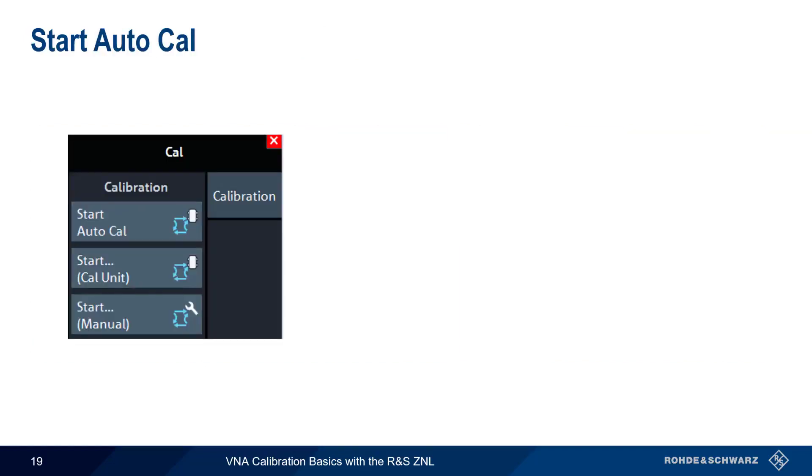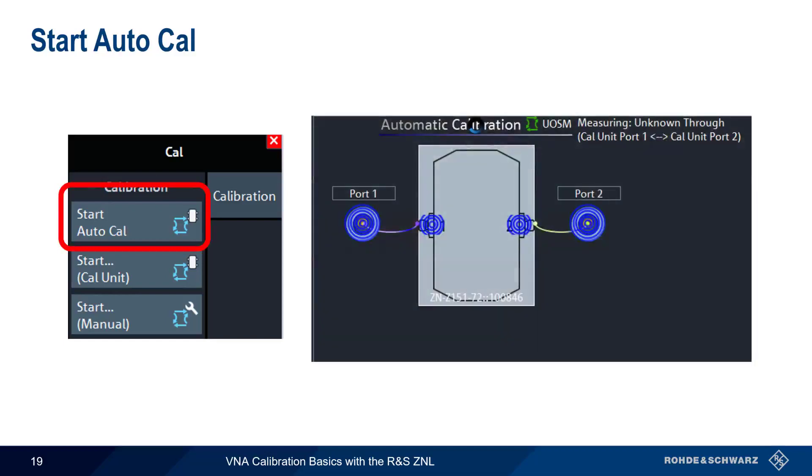The easiest AutoCal procedure is to simply click on Start AutoCal. The analyzer will automatically begin a full port through open short match calibration without any additional user input or intervention required.